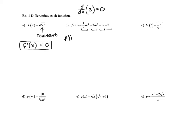The first term is one-sixth m to the fourth power. The one-sixth in front is a constant multiple, so that's just going to stay and get multiplied by the derivative of m to the fourth. Using the power rule, the exponent comes in front and we multiply by m raised to one power less. So the exponent four comes in front, and we subtract one from the exponent. The derivative of m to the fourth is four m to the third.